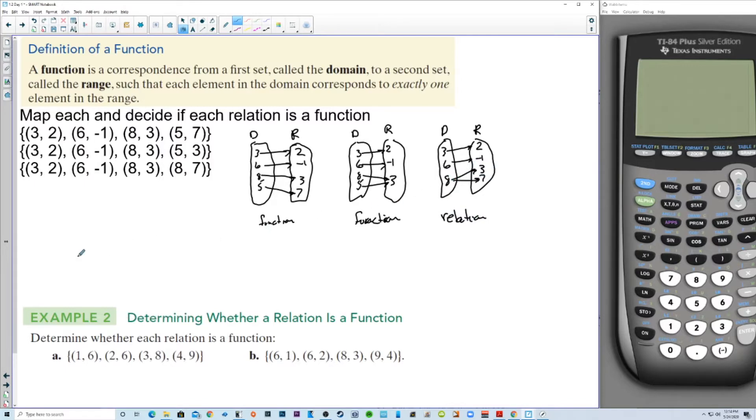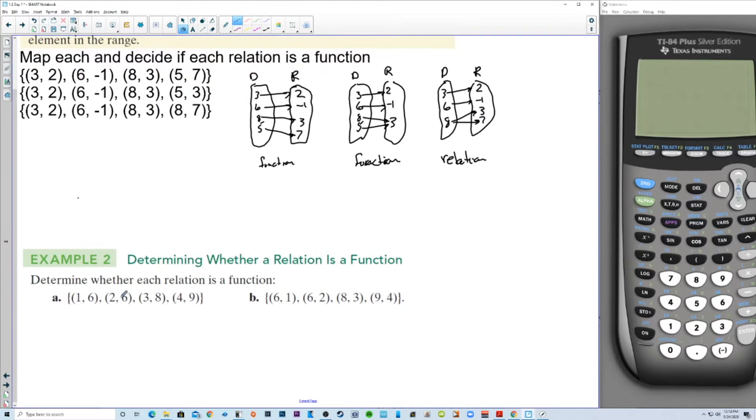So here's example two. Determine whether each relation is a function. So one, two, three, four. There's no repeats. So domain. I mean, if your x values repeat, then it's not going to be a function. So this is a function. None of the x values are repeating. In other words, one x value has one and only one output value. Now this, six goes to one and six goes to two. This is a relation.